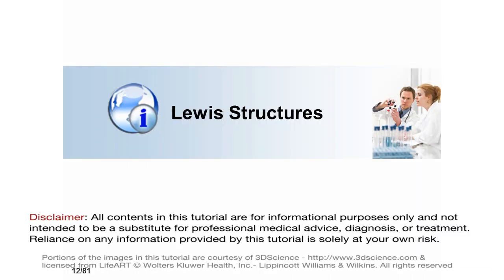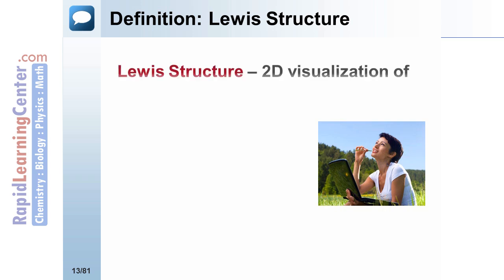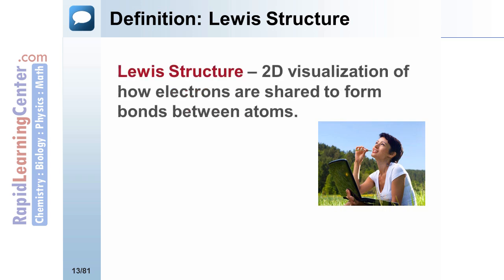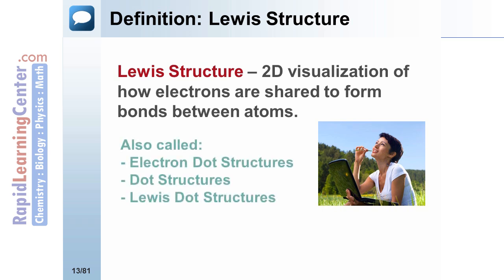What are Lewis structures? Lewis structures are two-dimensional representations of chemical bonds. Electrons are represented by dots, and the shared electrons show bonds. There are other common names for these, such as electron dot structures, dot structures, or Lewis dot structures.